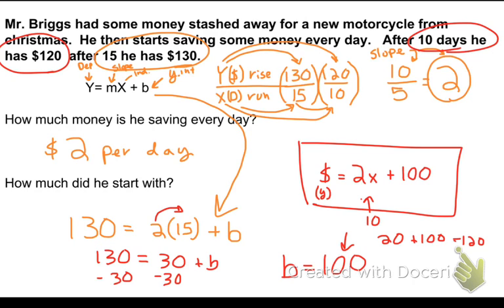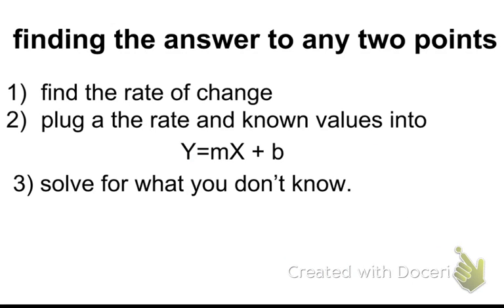Okay. That seems a little complicated, I have this little cheat sheet for you. Finding the answer to any two points using any two points. First, find the rate of change. And you do that by finding the change in y divided by the change in x. And that rate of change is your slope. And then, plug the rate and any known values into the y equals mx plus b equation. Your standard linear equation.